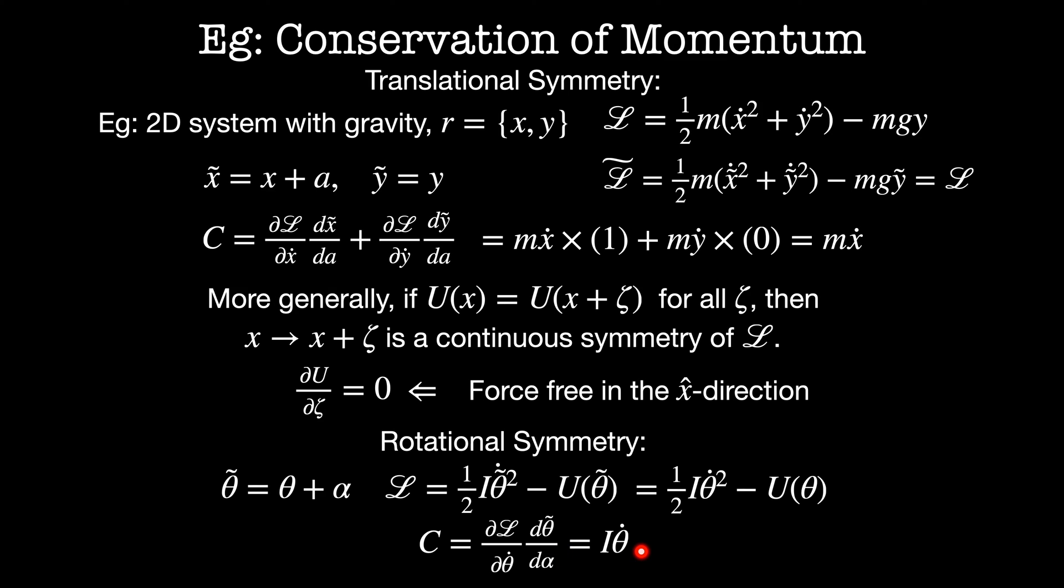Then our conserved quantity here is dL by d theta dot times d theta tilde by d alpha and this is equal to i theta dot, which is the definition of angular momentum. So having a system that is rotationally symmetric, that is a system where the origin of the angular component doesn't matter, that means we're guaranteed to have conservation of angular momentum.